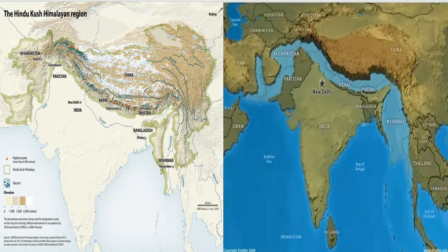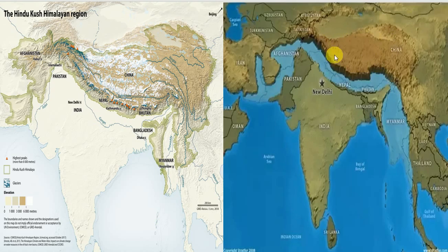Why are countries like India, Pakistan, Nepal, Bhutan, Bangladesh, Sri Lanka, and Maldives called the Indian subcontinent? Because these countries are separated from the rest of Asia by the Himalayan mountain ranges. As you can see on the map, the subcontinent is separated from the rest of Asia by the Himalayan mountain ranges. That is why these countries together are called the Indian subcontinent.